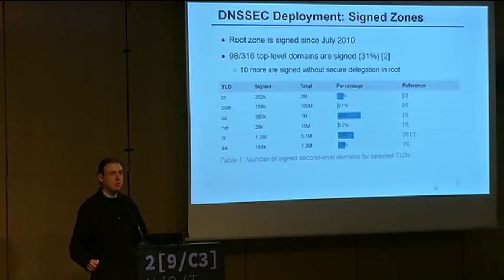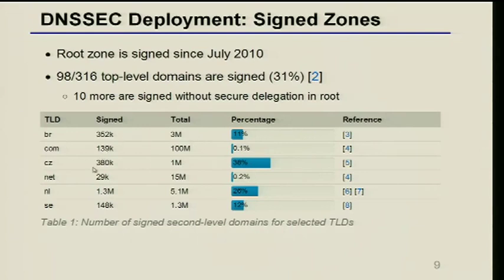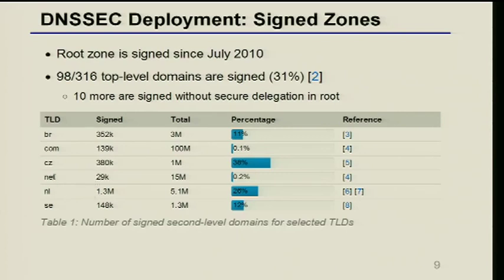What is the deployment status of DNSSEC? How many signed zones are there? The root zone has been signed for two years. There are around 100 signed top-level domains out of around 300. For example, .NL, the Netherlands top-level domain, has more than one million signed second-level domains — the largest signed zone. The .net top-level domain has only around 29,000. So it varies.